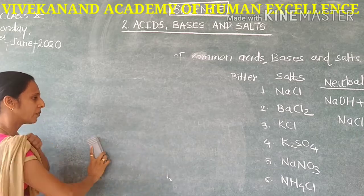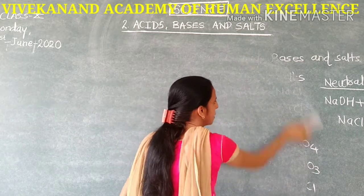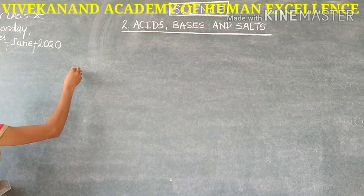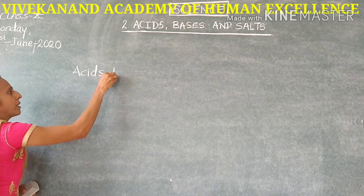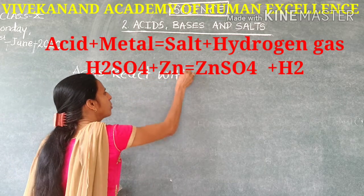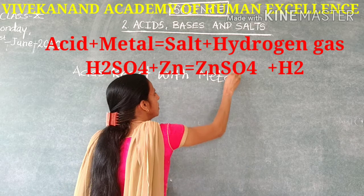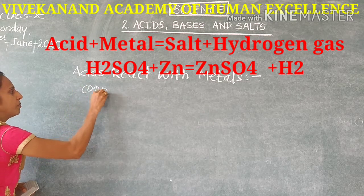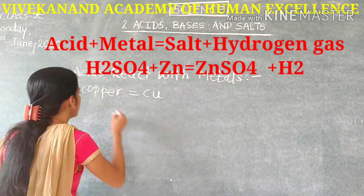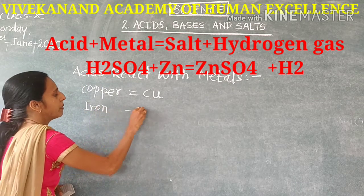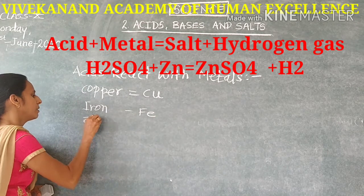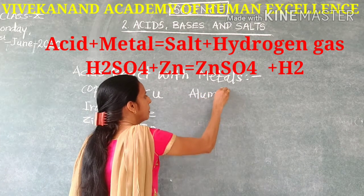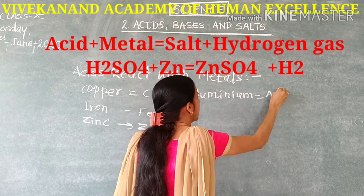How acids react with metals: common examples of metals are copper (Cu), iron (Fe), zinc (Zn), aluminium (Al), and magnesium (Mg). Among metals, there are some noble metals and some base metals. Base metals react easily with chemical substances, while noble metals like copper, gold and silver do not show reaction easily with other chemicals.